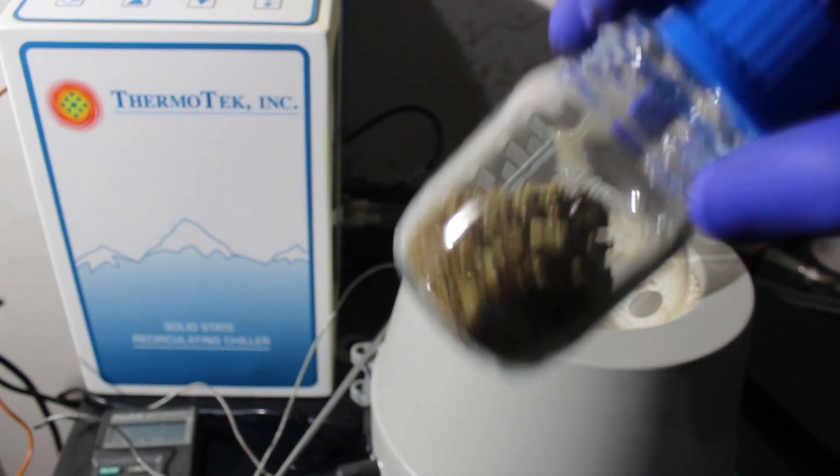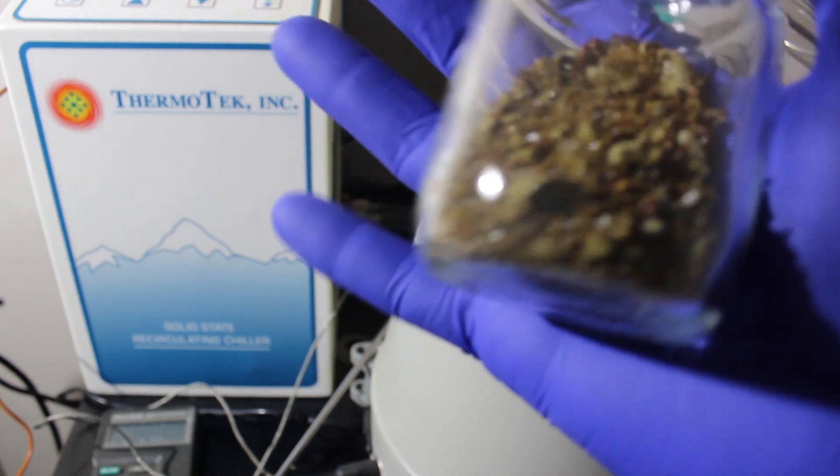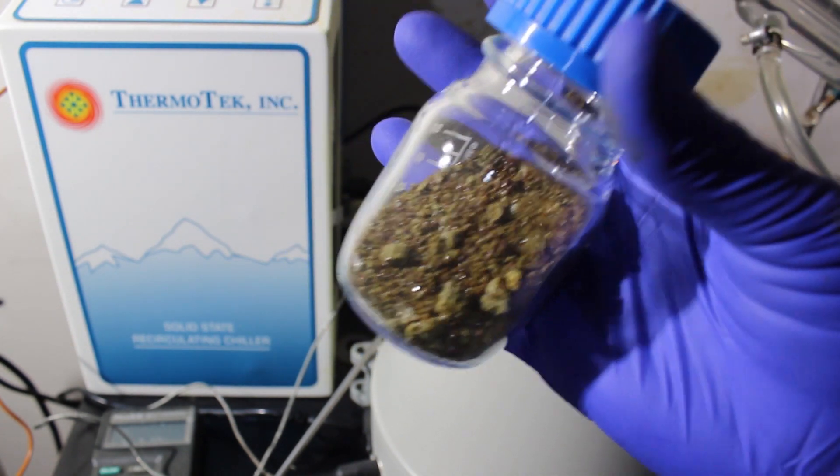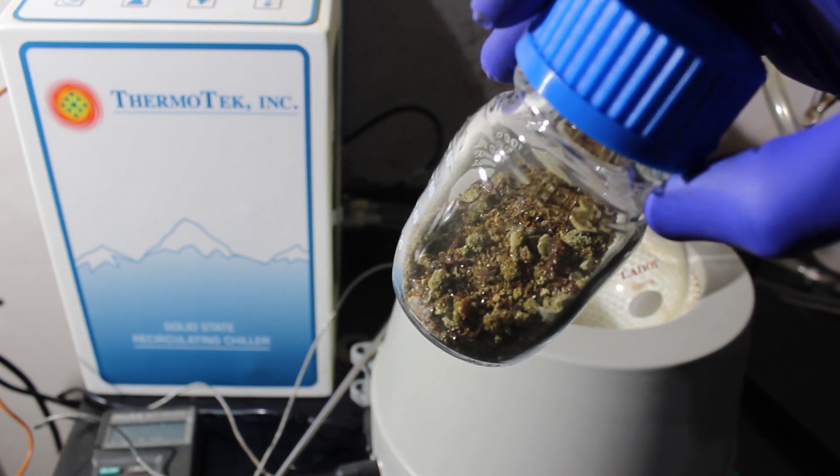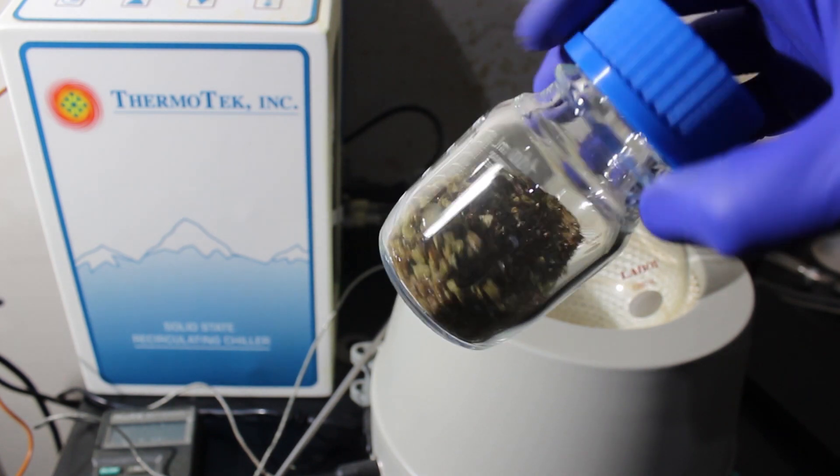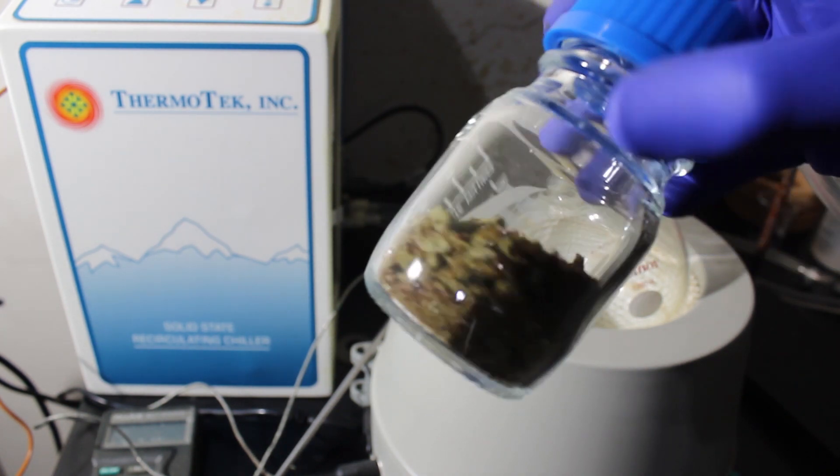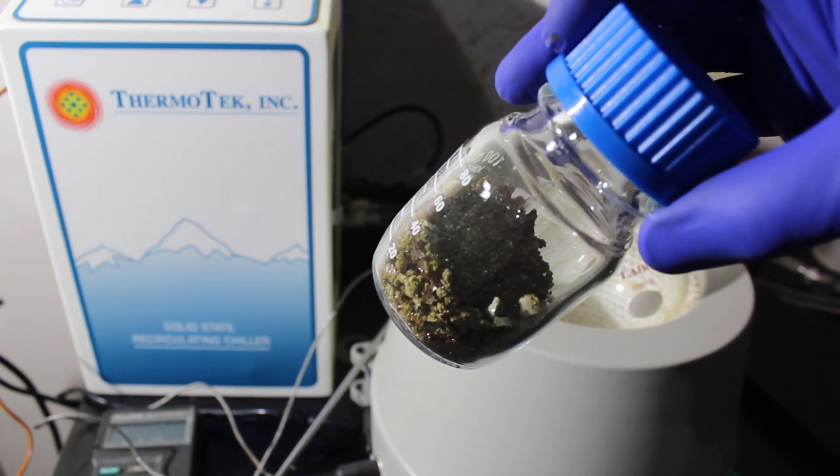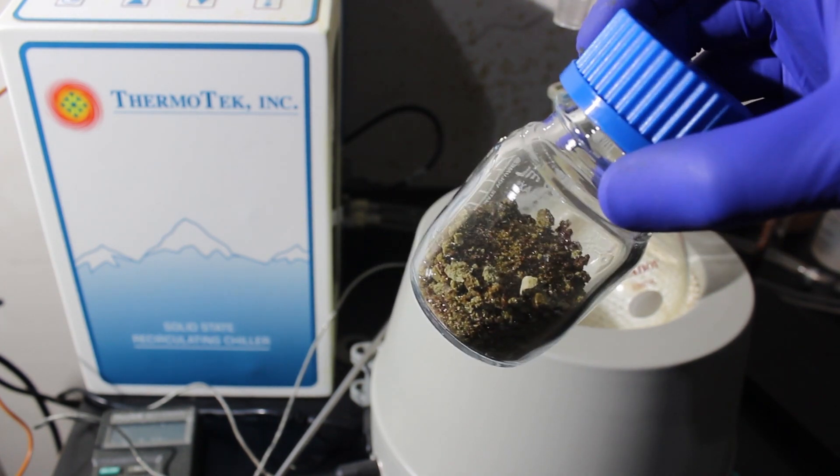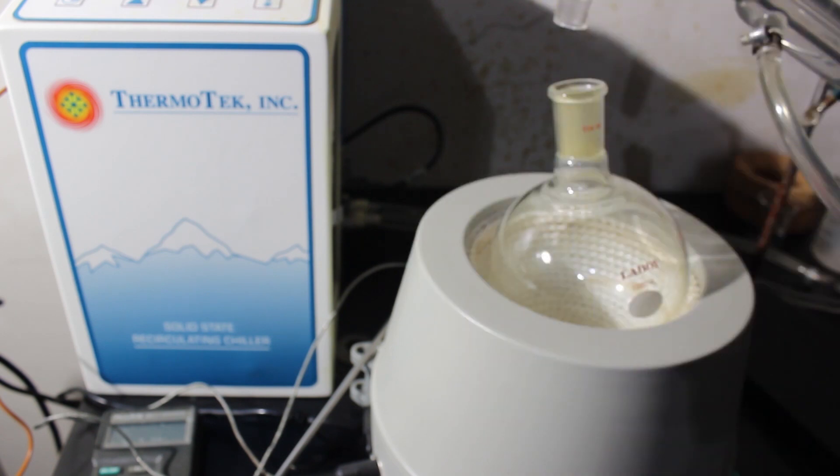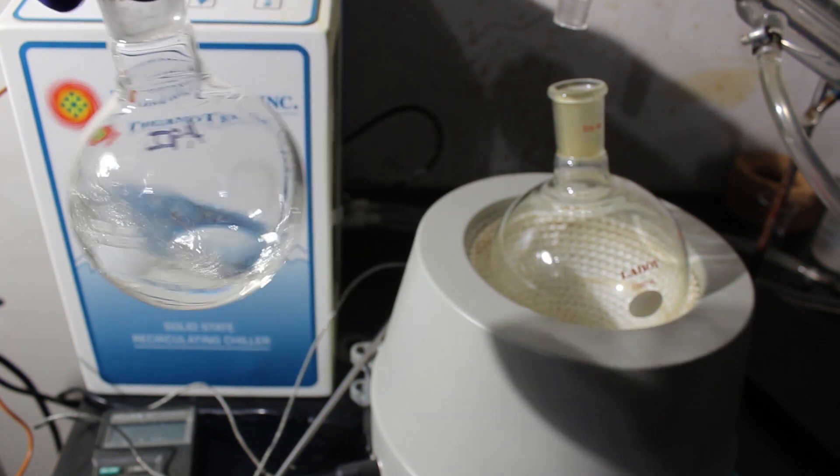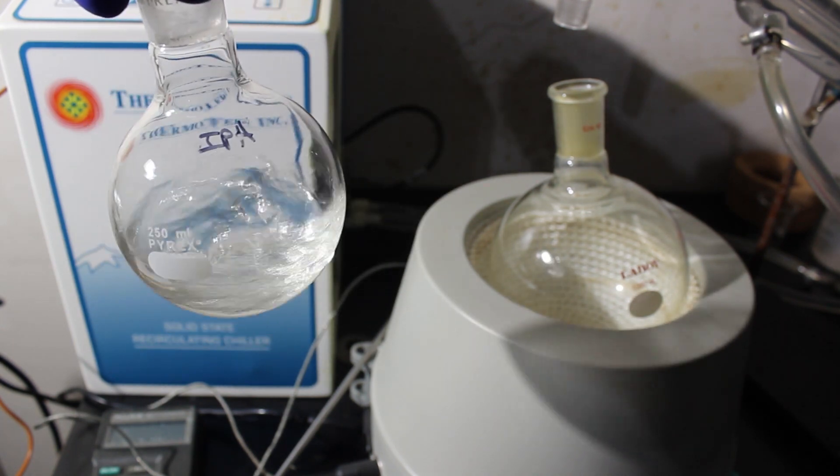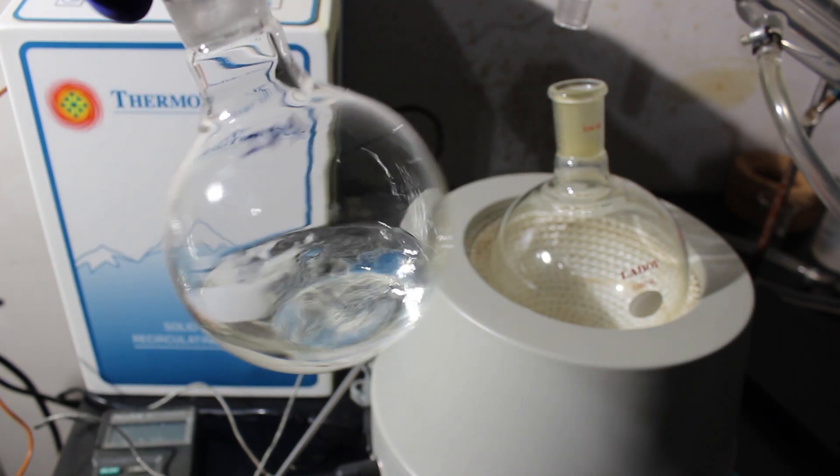After doing the distillation I was left with this solid down at the bottom of the flask. I've crushed it up and powderized it. It's kind of this weird brown-green color. I'll keep this, analyze it, and we'll see what it is. I also have my distillate here and we'll take that and see if we actually made some methyl iodide.